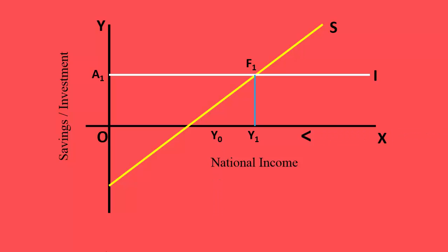Take income Y0. Let it be the prevailing income. It is less than the equilibrium level of income. Investment is F0 but savings is T0. Investment is greater than savings. It means aggregate demand is greater than aggregate supply. The business community will use the existing inventories to meet the demand.